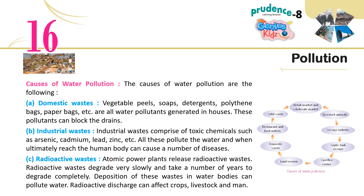B. Industrial wastes comprise toxic chemicals such as arsenic, cadmium, lead, zinc, etc. All these pollute the water and when ultimately reached the human body can cause a number of diseases. C. Radioactive wastes: atomic power plants release radioactive wastes. Radioactive wastes degrade very slowly and take a number of years to degrade completely. Deposition of these wastes in water bodies can pollute water. Radioactive discharge can affect crops, livestock and man.